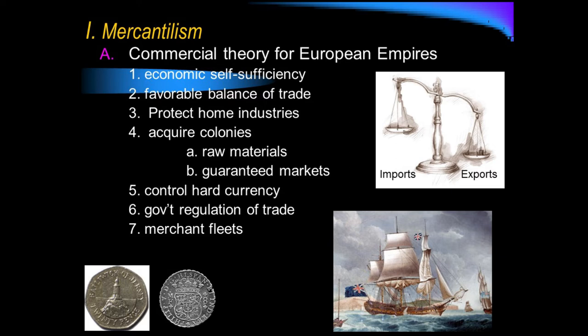Also in mercantilism, you want to protect home industries. England is an industrialized country — early industrialization — and they manufacture a lot of goods. Their largest manufacturing business was in textiles, which was their most profitable industry. So having colonies means the colonies are to provide raw materials and guaranteed markets.